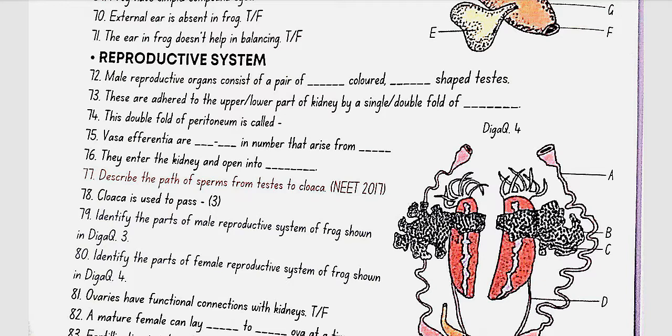Describe the path of sperms from testes to cloaca. Testes, vasa efferentia then kidney, Bidder's canal, urinogenital duct then cloaca. Cloaca is used to pass fecal matter, urine and sperms.